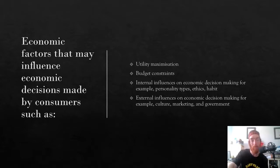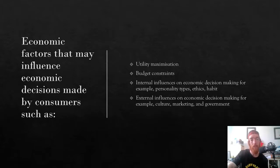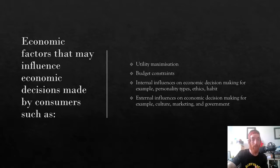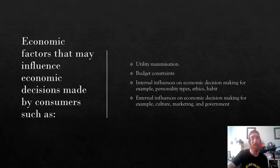A rational consumer would not go heavily into debt to satisfy their needs and wants. But as you probably know, Australia has a massive household indebtedness ratio, meaning people have way more debt than savings. Then there are internal influences — things like personality types, ethics, and habit. For example, you might not purchase animal products or things tested on animals. Some people buy a coffee on their way to work every day — that's an internal influence following a habit.